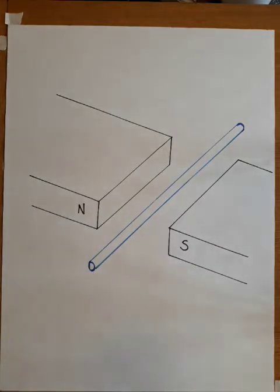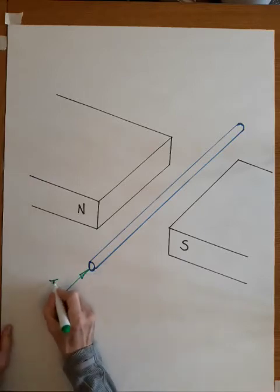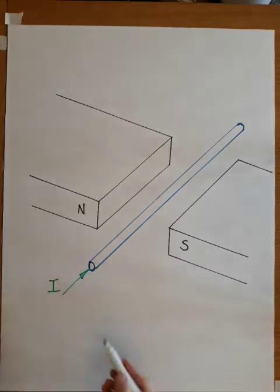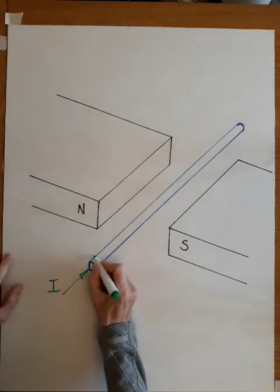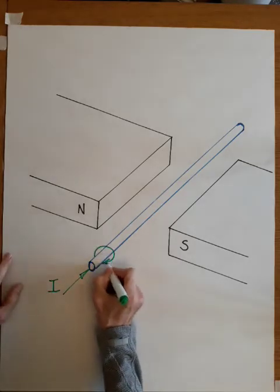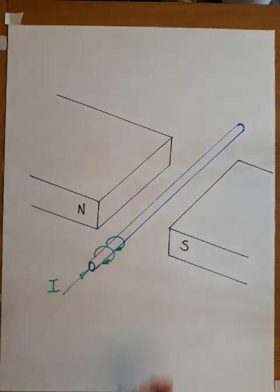We're going to pass a current into that conductor, and doing so will produce a magnetic field. So it will be a magnetic field going around the conductor as previously discussed.